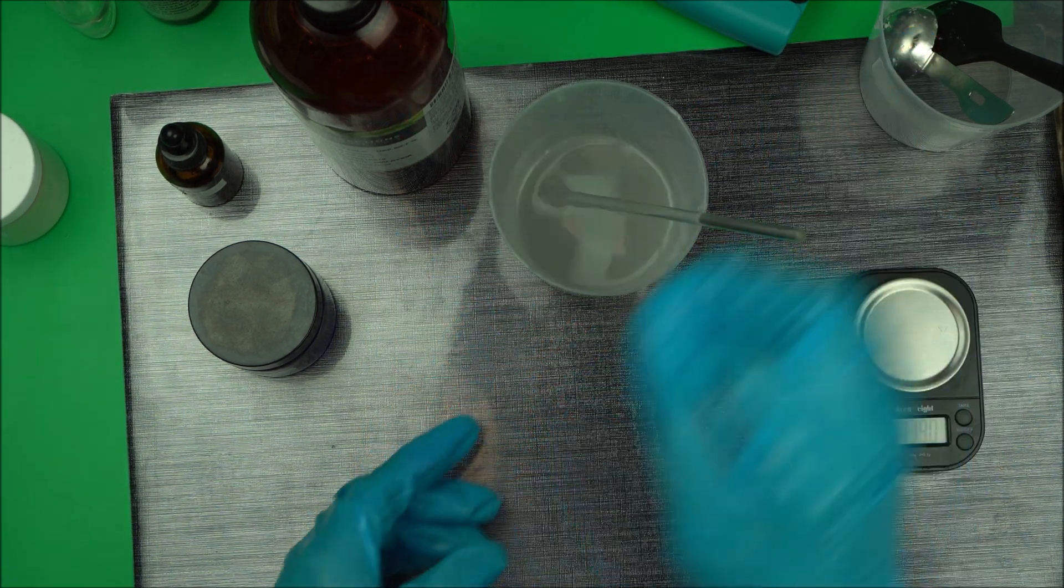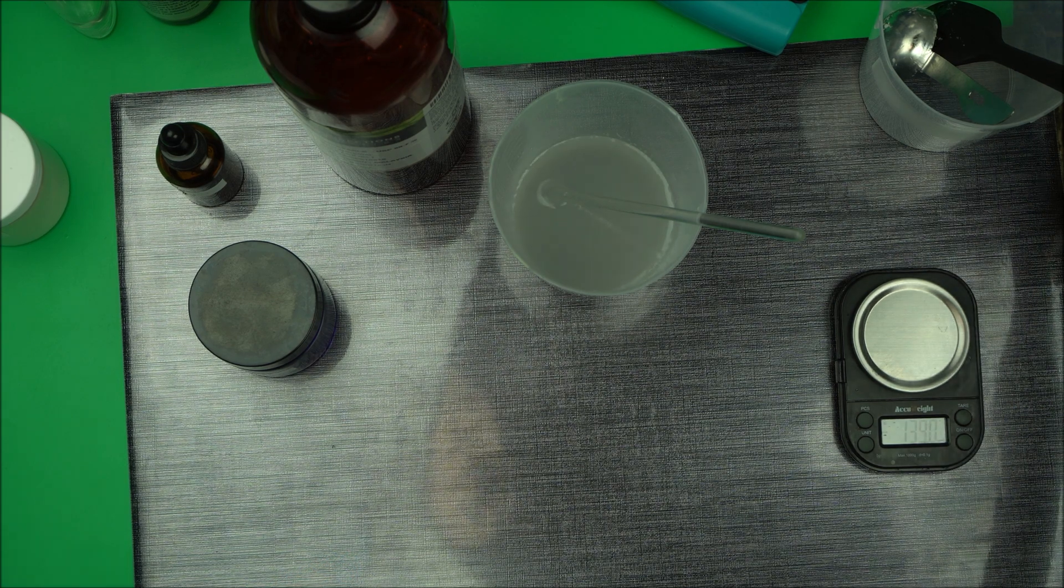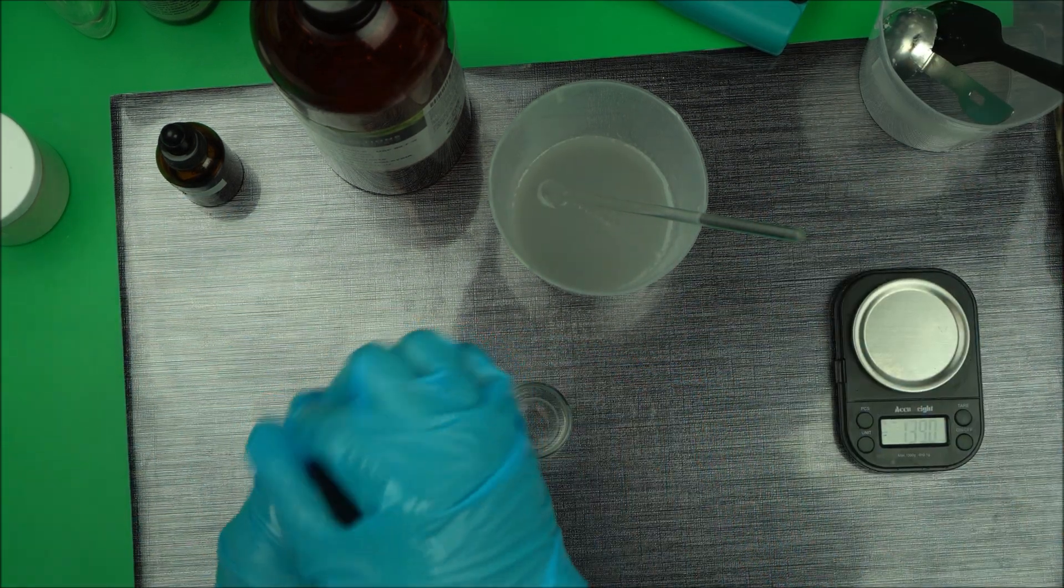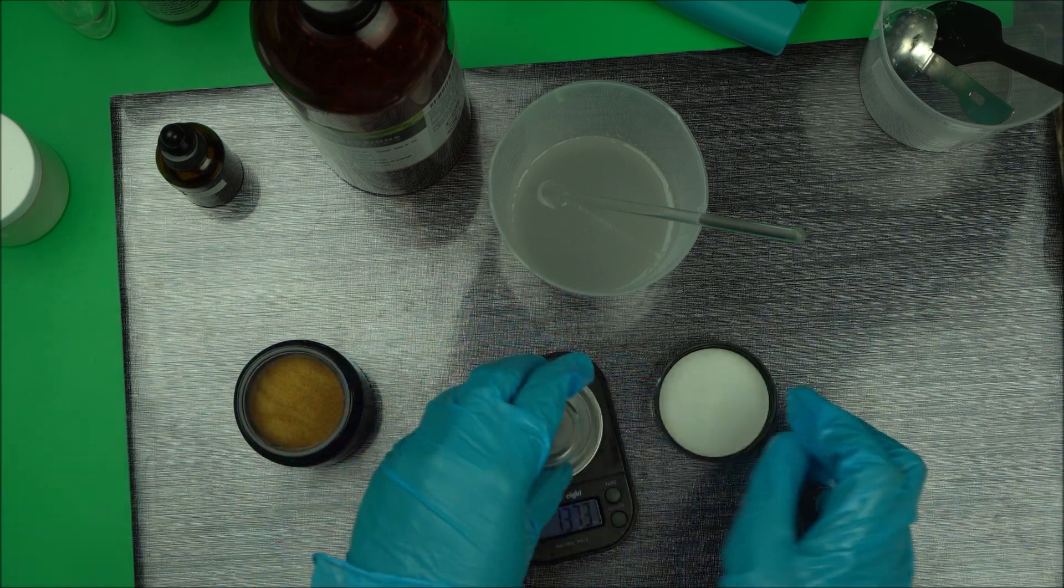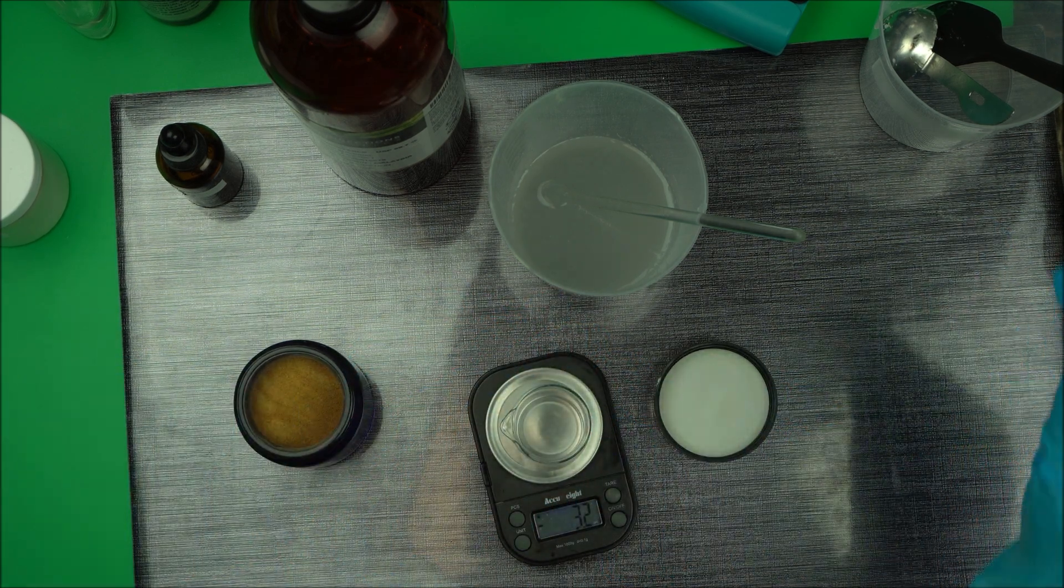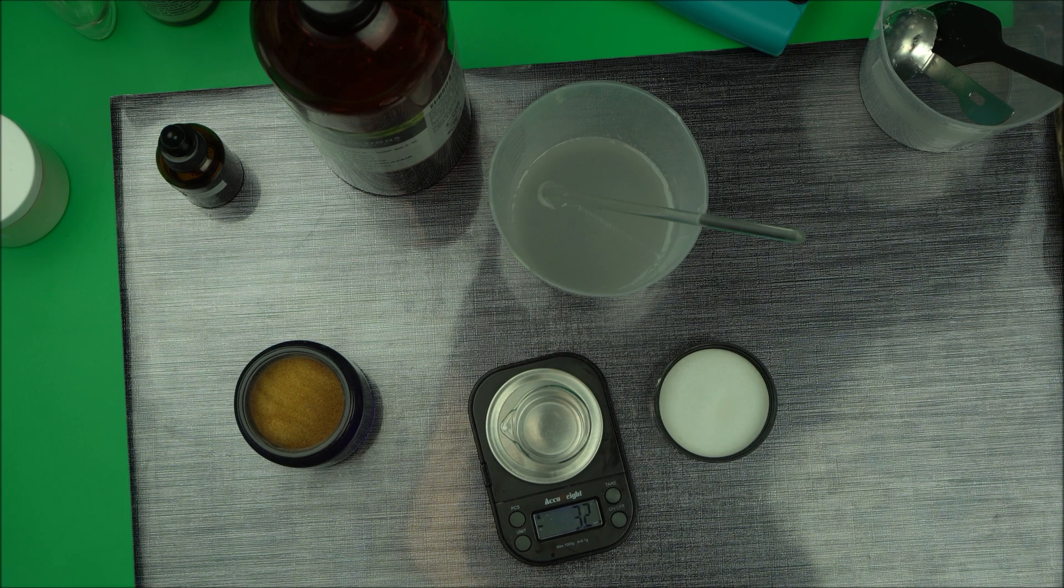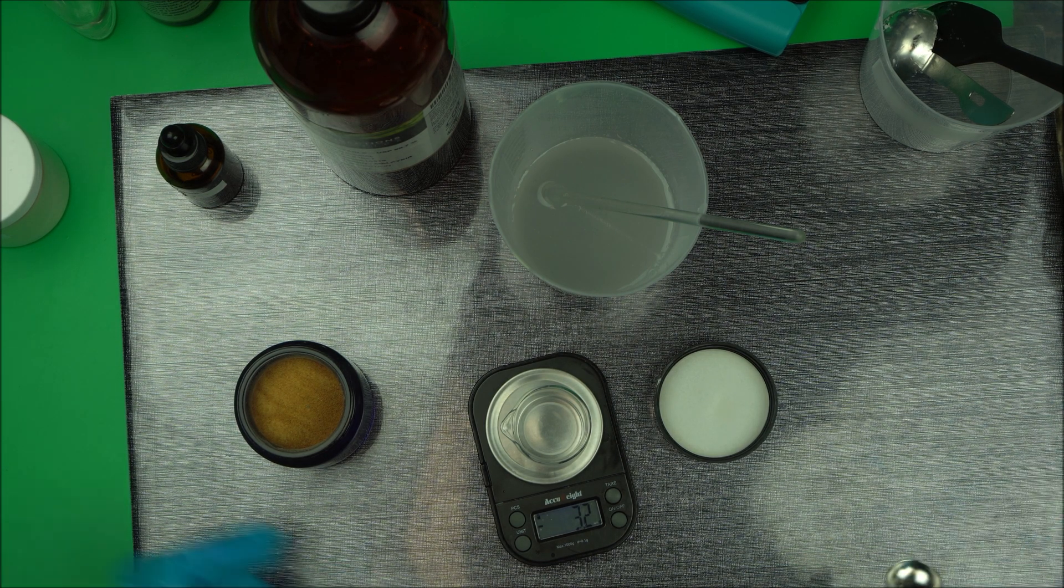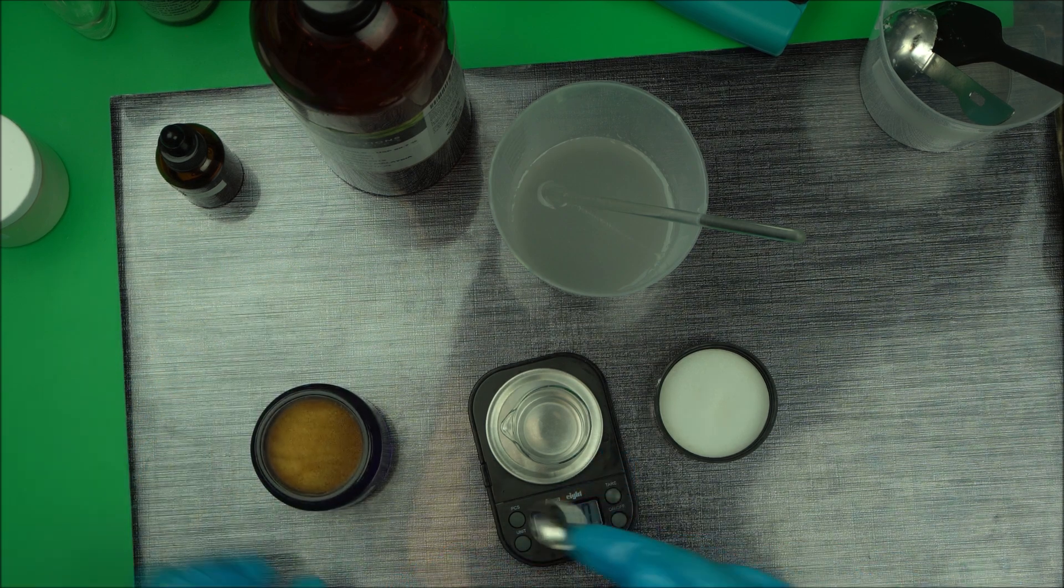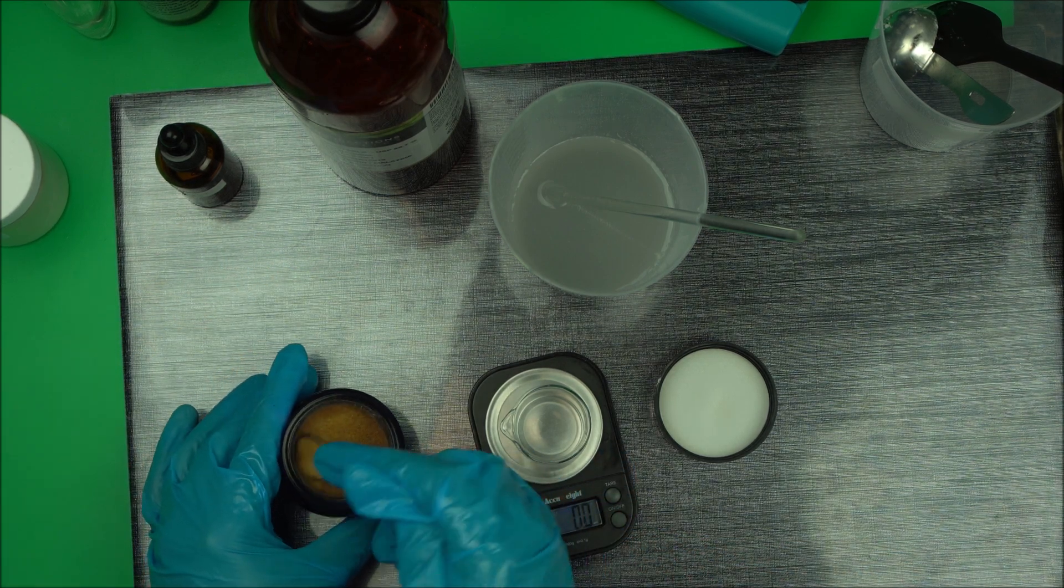Next, I'm going to take another little beaker and add my papaya powder to it. You can use any other powder form you have, you can even use coconut powder to make a serum. Just follow the same procedure. I'm going to measure 0.5 grams of papaya powder.